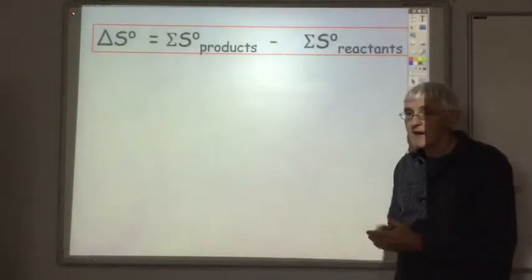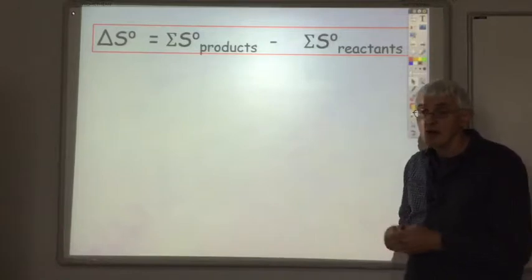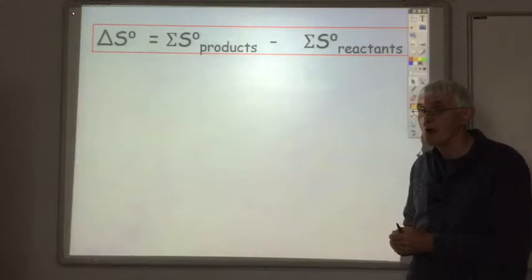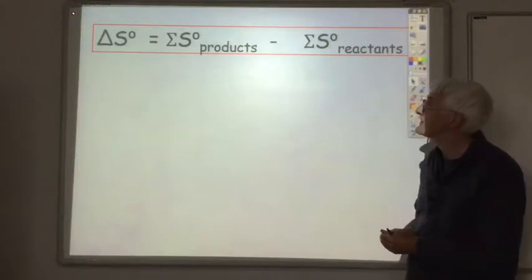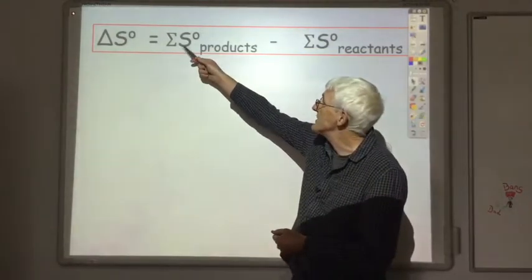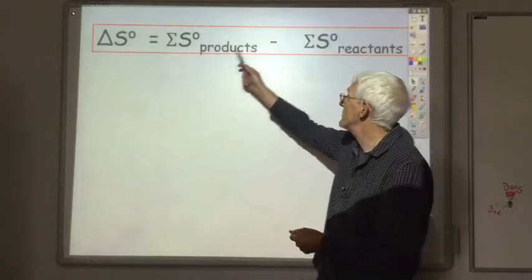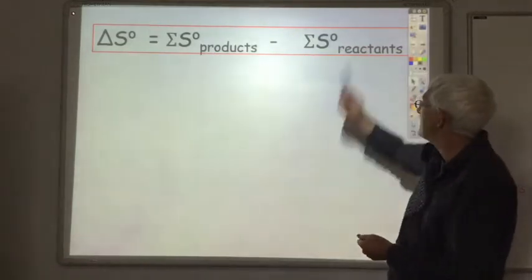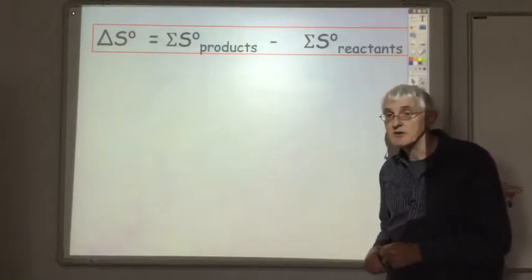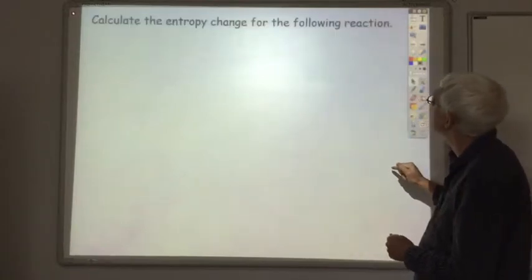Okay, here's our equation that we can then use to work out the entropy change for a reaction. Very similar to the one we saw in the previous lecture for working out the enthalpy change based on enthalpy of formations. So, the entropy change is the sum of the entropy values of the products, take away the sum of the entropy value of the reactants. Again, you'll find this equation in your data booklet.